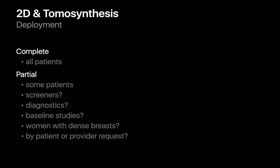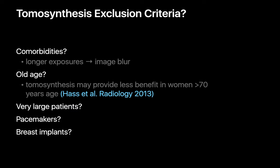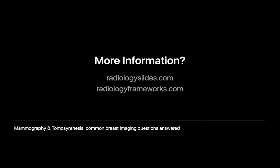Because of these factors, the deployment of tomosynthesis is often not universal and may be more targeted or heterogeneous. A practice may, for example, use tomosynthesis just for screeners, or just for diagnostics, or just for baseline studies, or just for women with dense breasts, or only when requested. This naturally leads to a discussion of possible exclusion criteria for tomosynthesis too. Generally, potential exclusion criteria that have been discussed include patients with comorbidities preventing them from staying physically still during the longer image acquisition time of a tomosynthesis study, women over 70 years of age, very large patients, and patients who have pacemakers or breast implants.